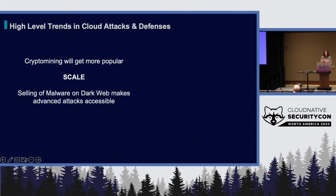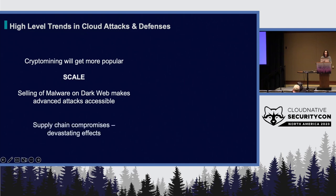The fact that these cybercriminal groups are able to offer their malware in an as-a-service model makes advanced attacks accessible even to those who aren't technically savvy — and this is part of that scale. We can expect these attacks to become more and more commonplace. Supply chain compromises can really have devastating effects. When people talk about supply chain compromises, we often hear about zero-day vulnerabilities — ones that attackers know about but haven't been publicly disclosed. While those are scary and worth noting, I think it's more terrifying that publicly disclosed vulnerabilities are still being weaponized.